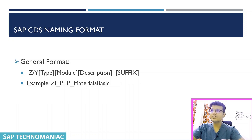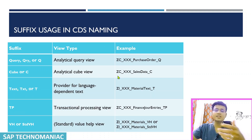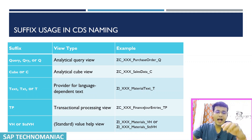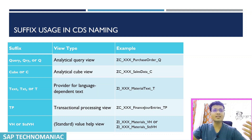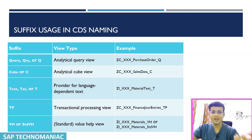Then the suffix. We discussed the type; now the suffix, especially when working with analytical modeling. We can create CDS for analytical purposes — cubes, dimensions, facts, and queries. For the cube CDS view, use the suffix C. For the query CDS view — which is usually a projection CDS view — use underscore Q.